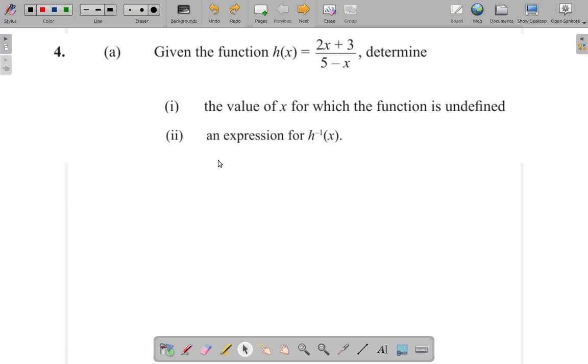The next section is saying that you should find or determine an expression for h inverse of x. So h of x is equal to 2x plus 3 over 5 minus x. Now one thing you can do when you're finding the inverse of a function, rewrite h of x as y. y is 2x plus 3 over 5 minus x.